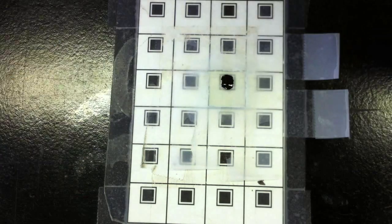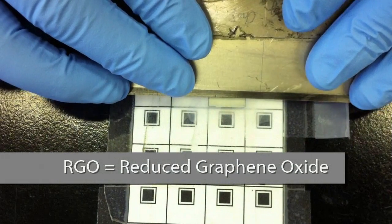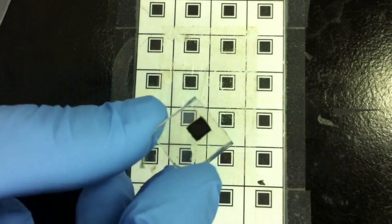For our counter electrodes, we use a copper RGO composite material cast on a fluorine-doped tin oxide electrode.